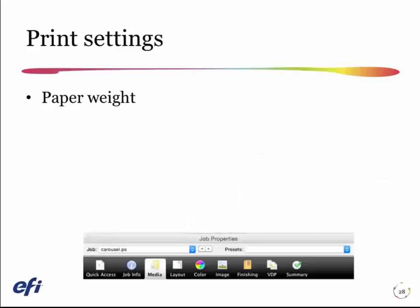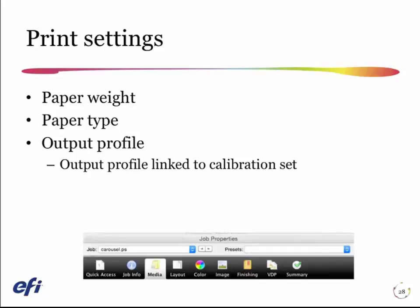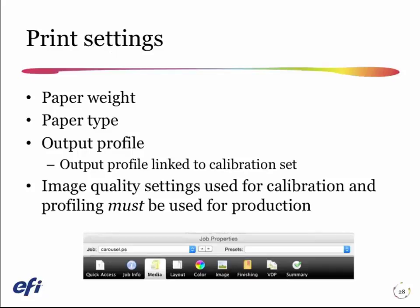Specifying paper weight and paper type are on the media tab. As we move across through the job properties, we will pick the output profile on the color tab, and the next tab over — image — is where we'll set the image quality settings. Reminding you that these need to be the same settings used to make the calibration and profile.